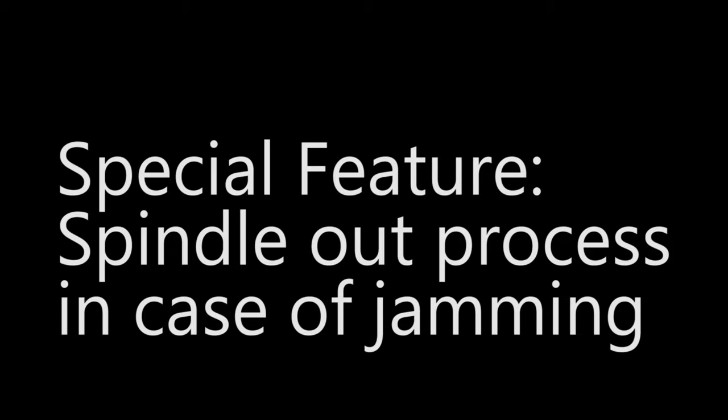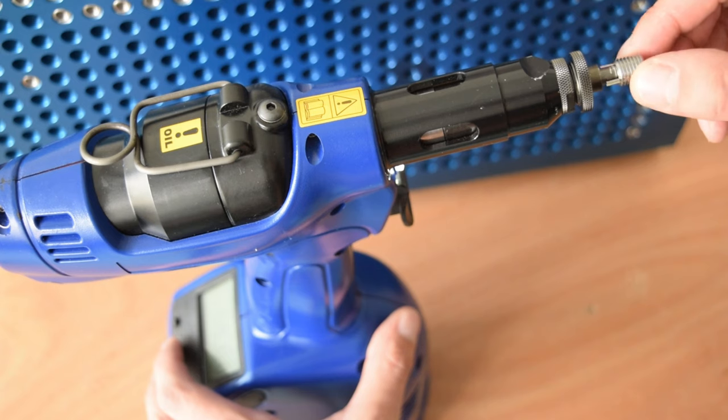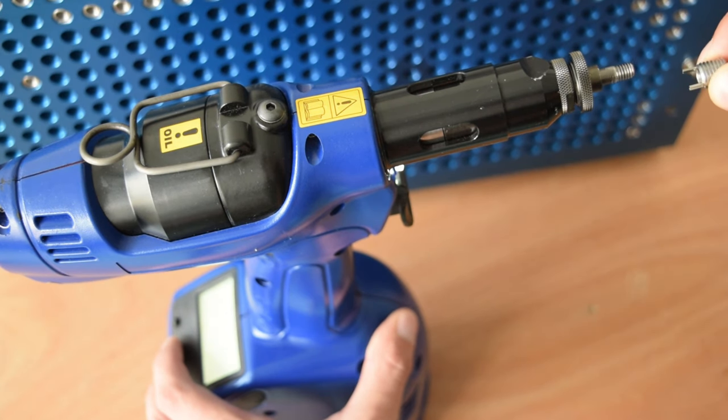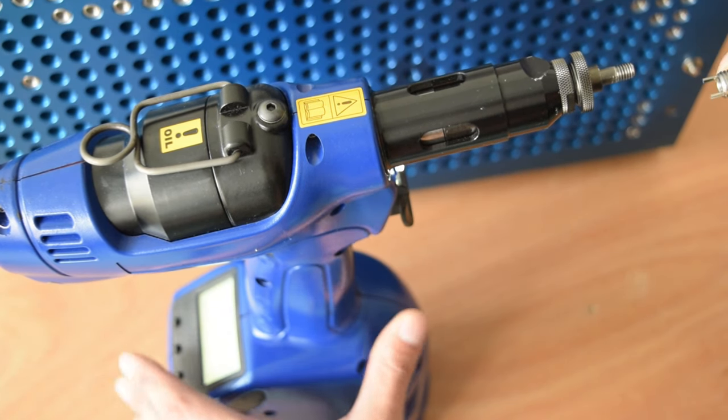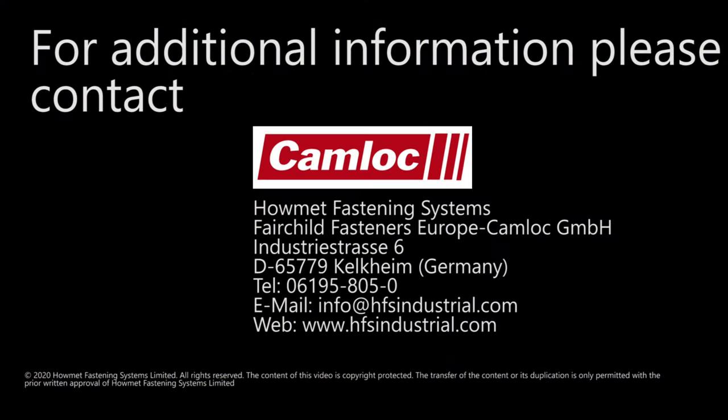Special feature, spindle out process in case of jamming. When the key insert gets stuck during installation, it can be unscrewed with a button on the tool's display. Hold the button until the tool is completely screwed out.